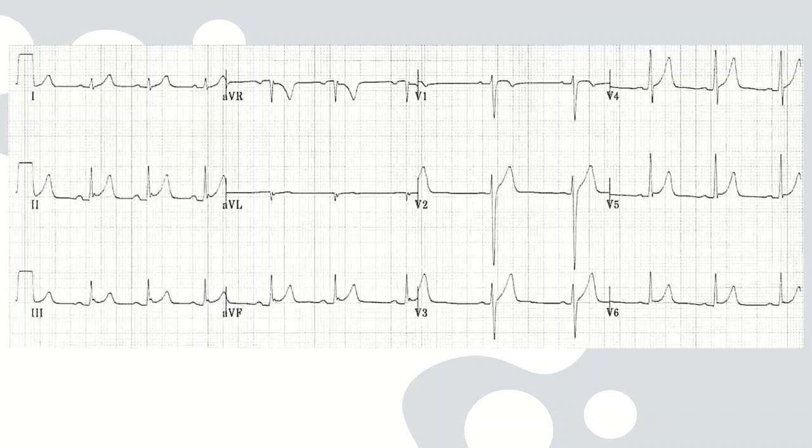Now look at this ECG. So if I can take a laser pointer, now here if you see the precordial leads, you would see that the ST elevation is sort of concave. And you see the T waves are upright, they are concordant T waves. And you see here on the ST elevations which are widespread you see some notching, notching of the ST points.